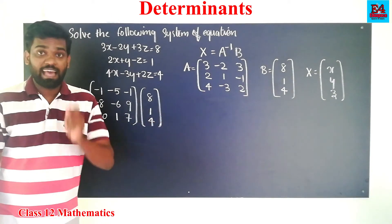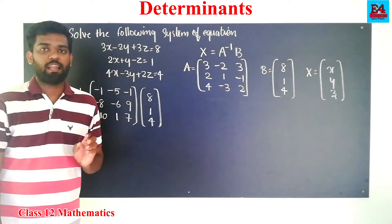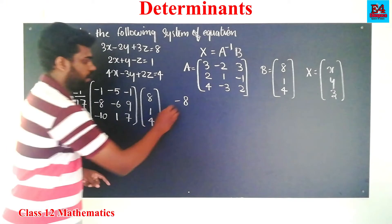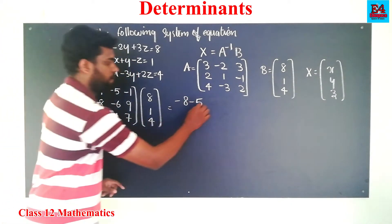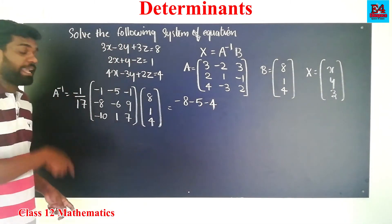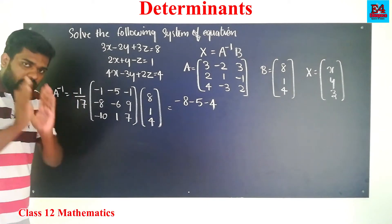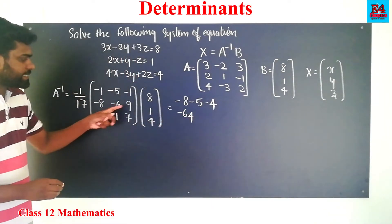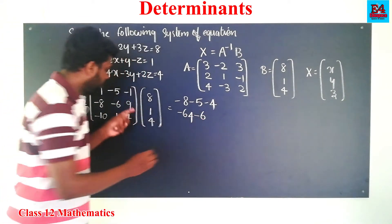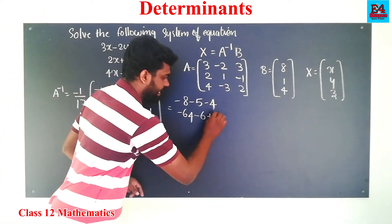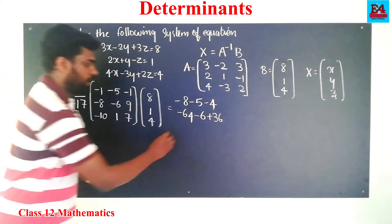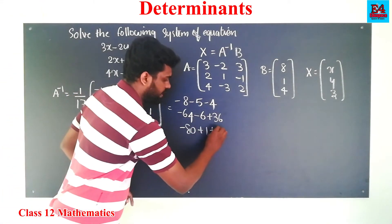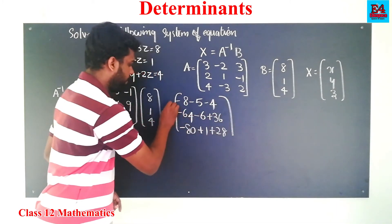We will multiply these matrices. First row: minus 1 into 8 is minus 8, minus 5 into 1 is minus 5, minus 1 into 4 is minus 4. So we have minus 1 by 17 times that. Second row: minus 8 into 8 is minus 64, minus 6 into 1 is minus 6, 9 into 4 is plus 36. Third row: minus 10 into 8 is minus 80, 1 into 1 is plus 1, 7 into 4 is 28.